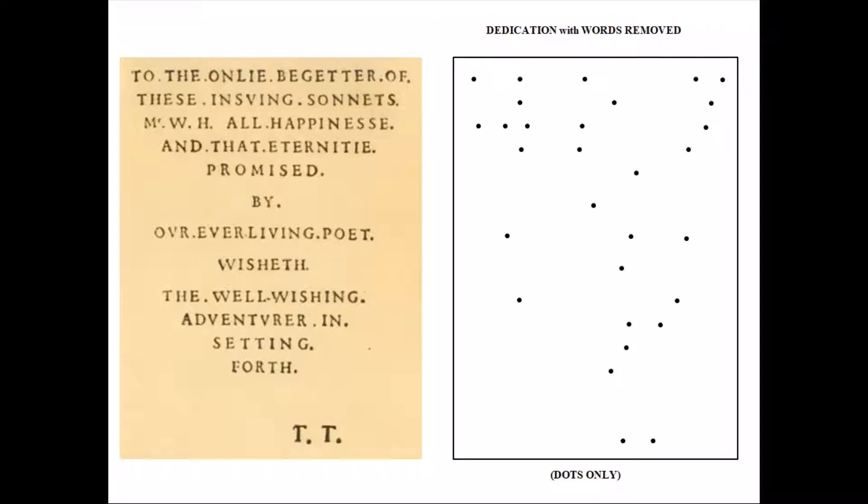It was suggested by Alexander Waugh that I might want to examine the dots or points found on the Sonnet's dedication page. On the right is what the page looks like with the words removed. I thought maybe that the dots should be connected, revealing a shape, but initially when I tried that, nothing significant turned up.